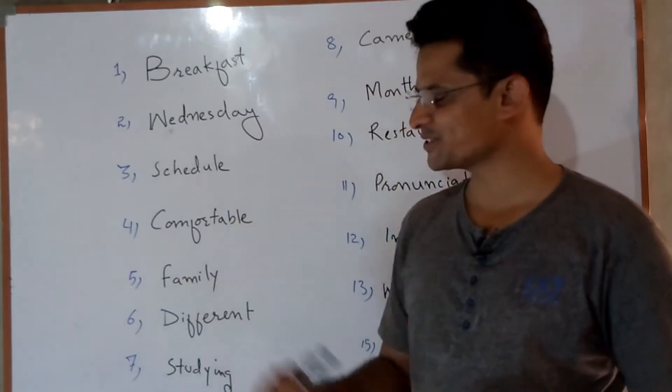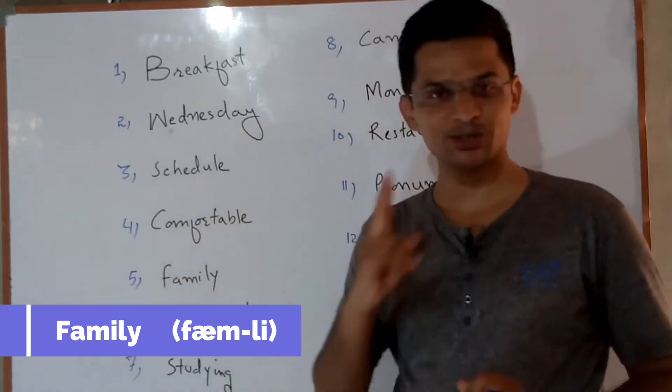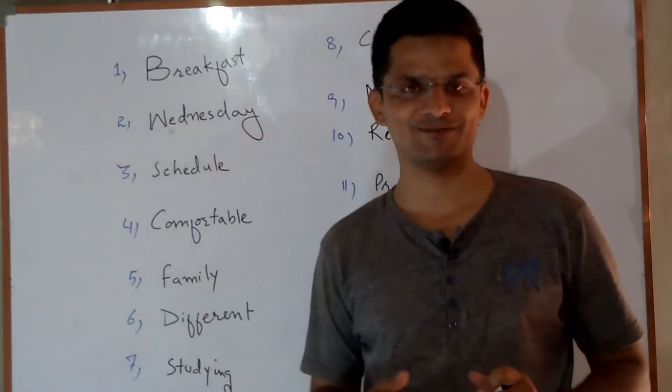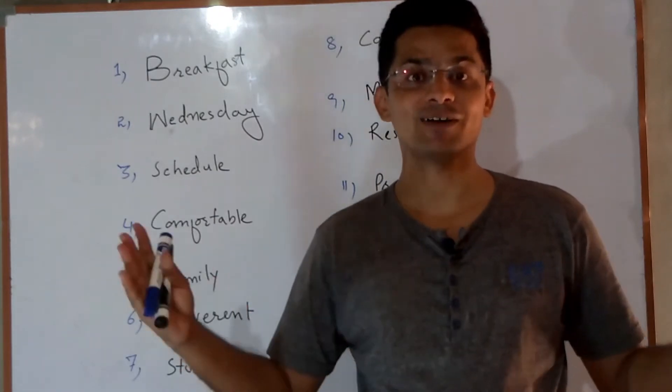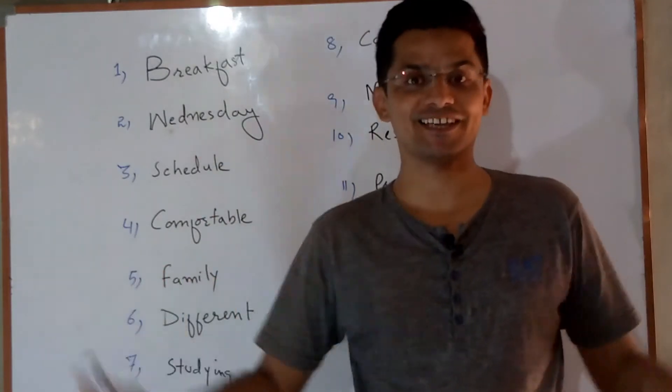Next: Family. Two syllables. Finally. We have a small family. You have a big family.